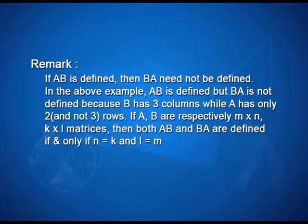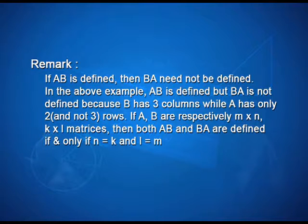There is a special remark to be made. If AB is defined, then BA need not be defined. In the above example, AB is defined, but product BA is not defined because B has 3 columns while A has only 2 rows, not 3. If A and B are respectively of order M by N and K by L, then both AB and BA are defined if and only if N equals K and L equals M. In particular, if both A and B are square matrices of the same order, then both AB and BA are defined.